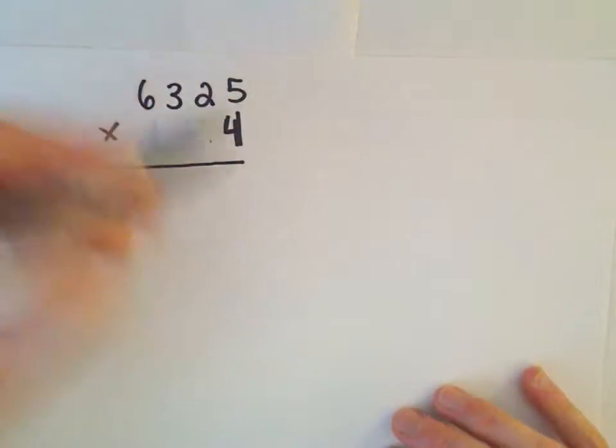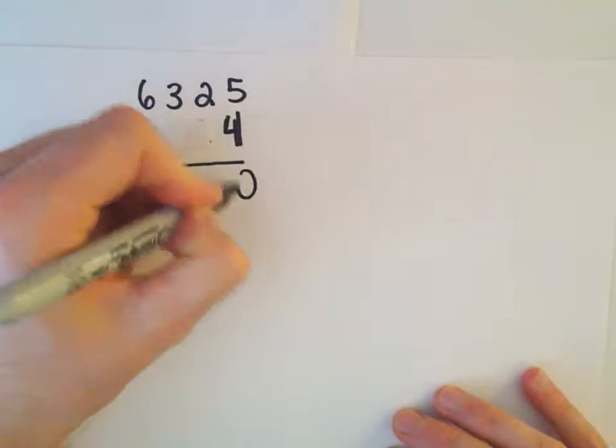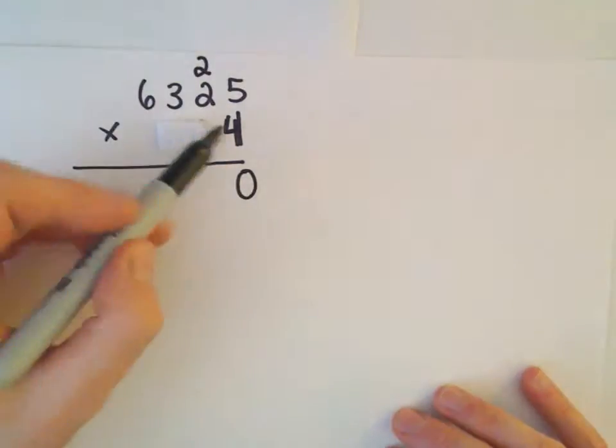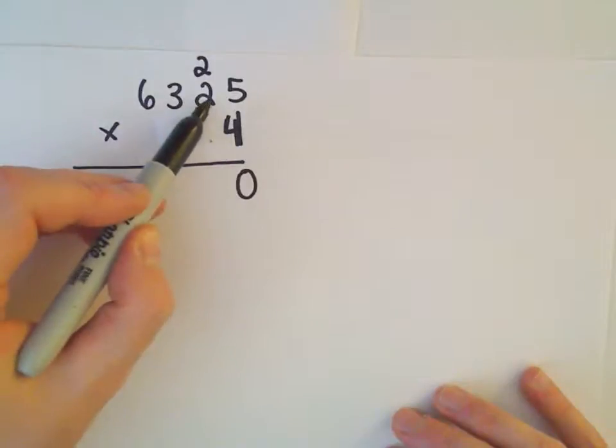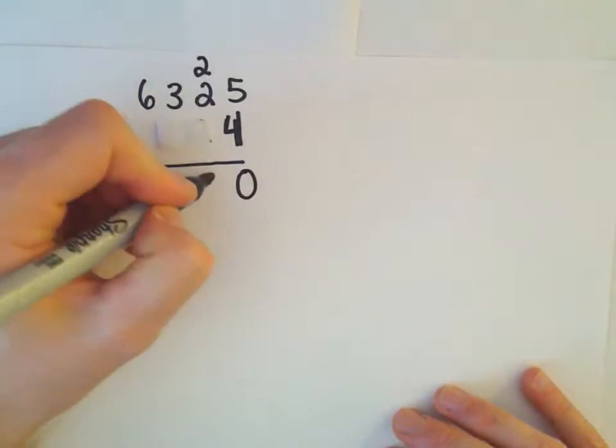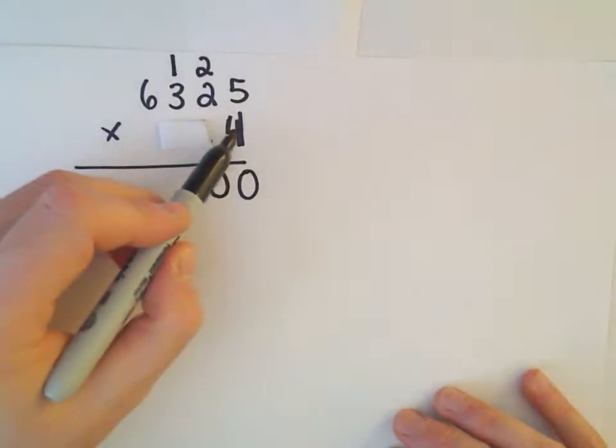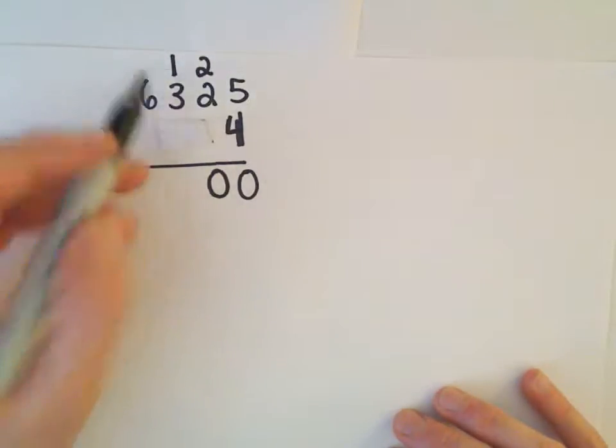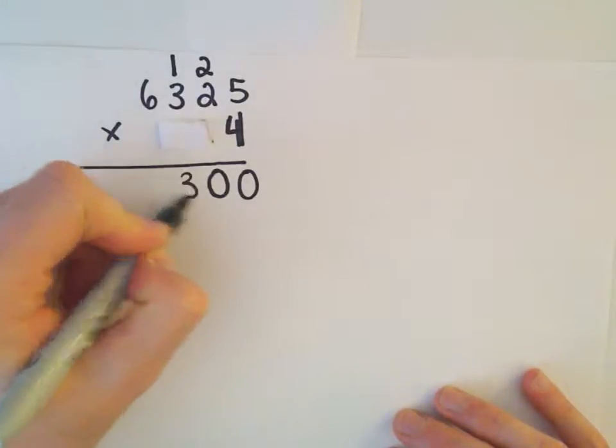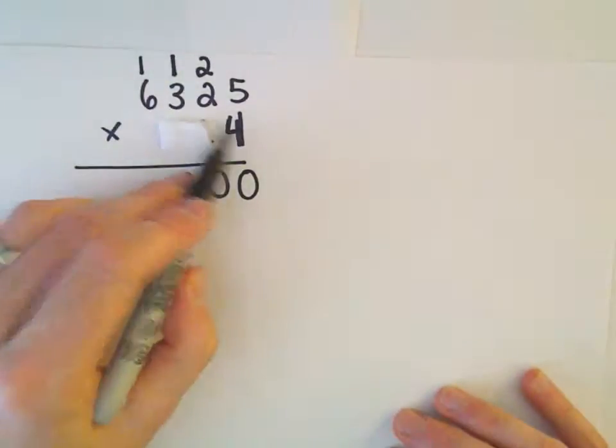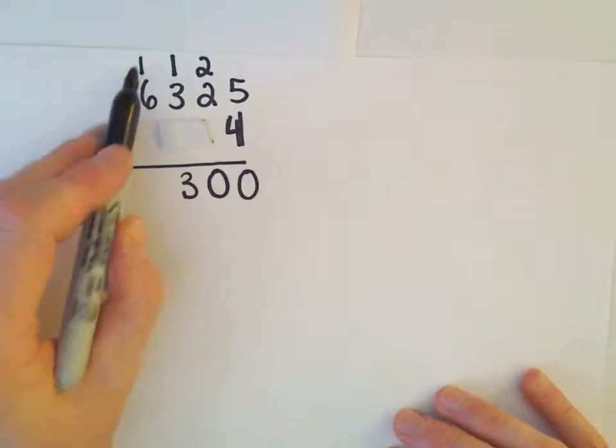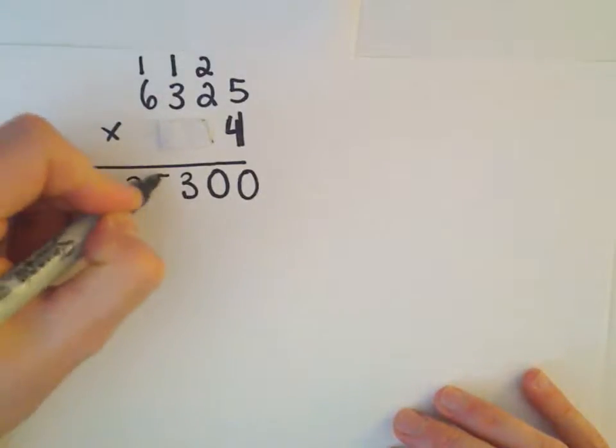So let's see, 4 times 5 is 20. We keep the 0 and carry the 2. 4 times 2 is 8, plus 2 is going to be 10. So I'm going to keep the 0 and carry the 1. 4 times 3 is 12, plus 1 is going to be 13. I'm going to keep the 3 and carry the 1. And then 4 times 6 is 24, plus 1 is going to be 25.